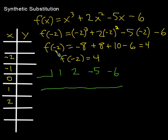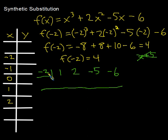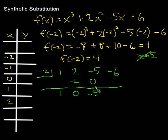We want to evaluate for x equals negative 2, so we put negative 2 in the box. Unlike synthetic division — where you take the opposite sign — for synthetic substitution you just put the x value directly in the box. Then: 1 plus 0 is 1; negative 2 times 1 is negative 2; 2 plus negative 2 is 0; negative 2 times 0 is 0; negative 5 plus 0 is negative 5; negative 2 times negative 5 is positive 10; negative 6 plus 10 gives us 4. So f of negative 2 equals 4.